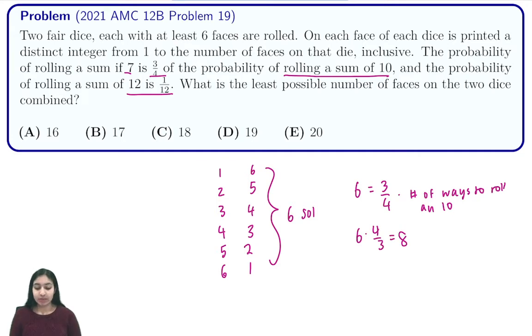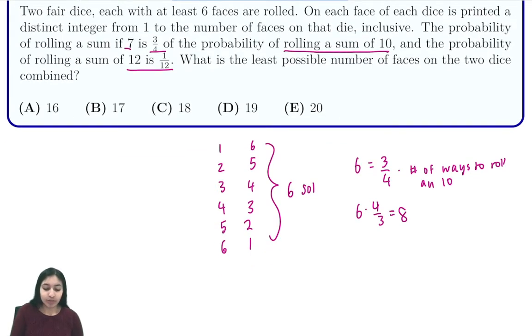So now you have two pieces of information: that there are eight ways to roll a ten and the probability of rolling a sum of twelve is one-twelfth. Let's use our second piece of information which is that P of a twelve is one-twelfth.